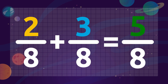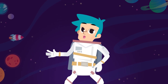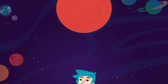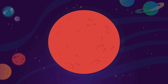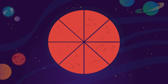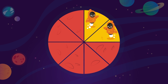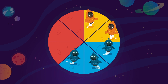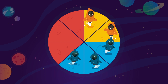The result is 5 over 8. Are you up for a challenge to practice a bit more? In the Smile and Learn universe, there's a planet called Smileython. This planet is divided into eight equal parts. Two-eighths of the planet are occupied by friendly aliens, and the remaining three-eighths by grumpy aliens.